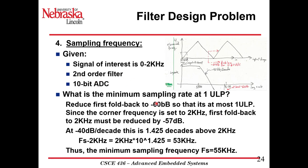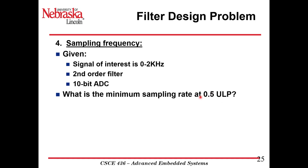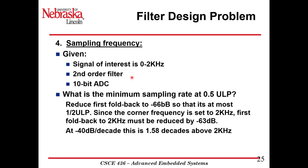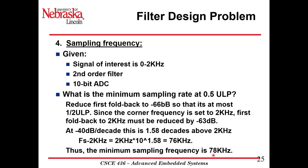If we reduce the minimum to 0.5 ULP, foldback frequencies need minus 66 dB. After accounting for the minus 3 dB at the corner frequency, we need to reduce by at least 63 dB. At minus 40 dB per decade with a second-order filter, that's 1.58 decades above 2 kHz. Fs minus 2 kHz equals 2 kHz times 10 to the power of 1.58, giving 76 kHz. Therefore, our minimum sampling frequency should be 78 kHz.